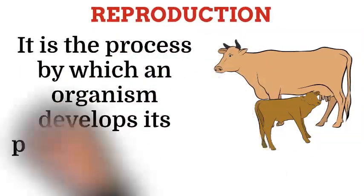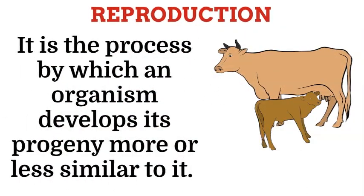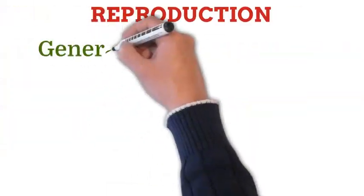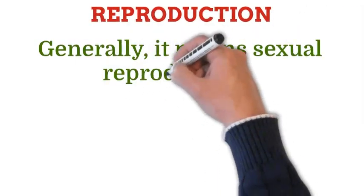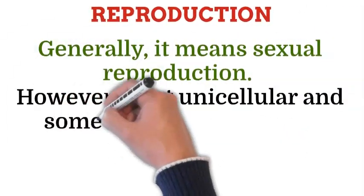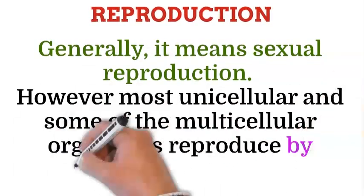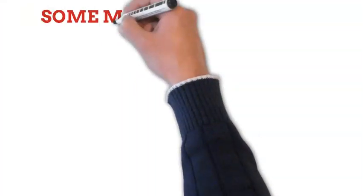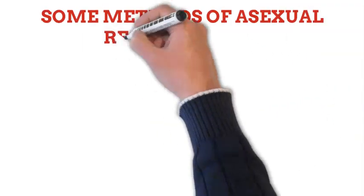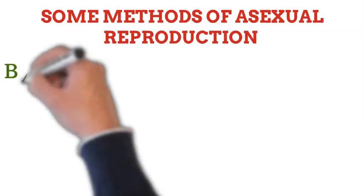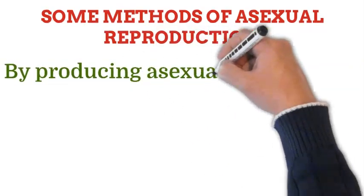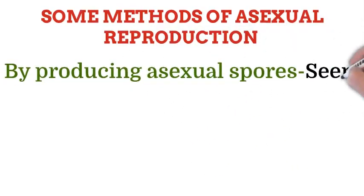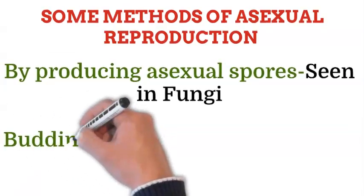Reproduction is the process by which an organism develops its progeny, more or less similar to itself. Generally by reproduction we mean sexual reproduction. However, most unicellular and some multicellular organisms reproduce by asexual means also. Some methods of asexual reproduction include multiplication by producing asexual spores, which is seen in fungi.